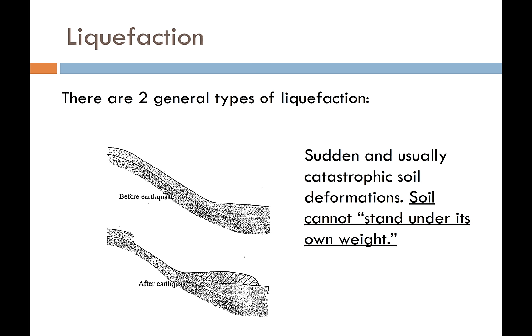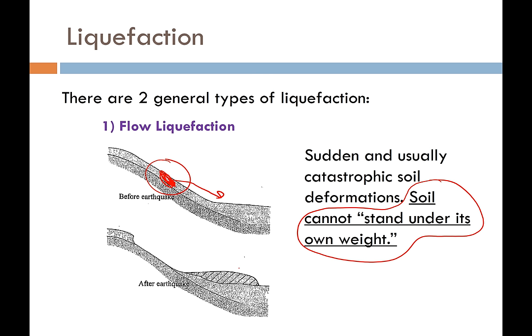That's the basic mechanism behind liquefaction. Now let's zoom out and look at liquefaction from a higher elevation. There are essentially two general types of soil liquefaction. The first type is flow liquefaction, characterized by a sudden and usually catastrophic soil deformation. If soil on a slope liquefies, it can't hold itself up under its own weight, so that soil flows downslope. We can get tremendous ground deformations, and this type of effect can really cause damage and hurt people because it happens very quickly and usually without warning.